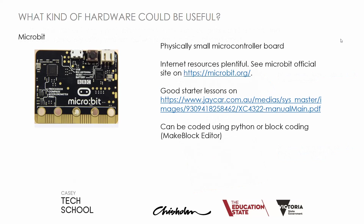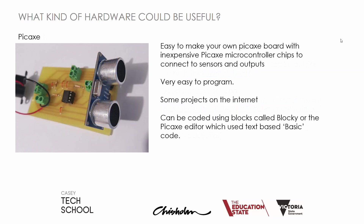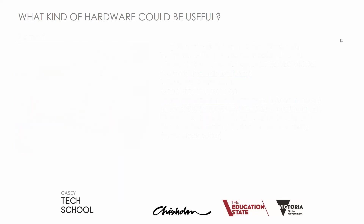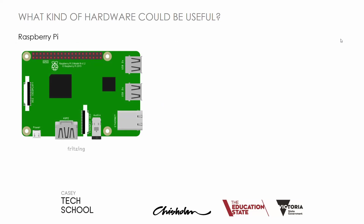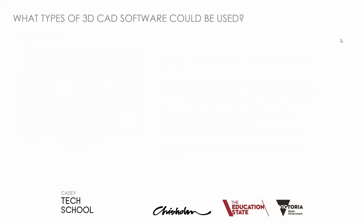A Microbit is another microcontroller board which has gained popularity. It's small, easy to use, there are lots of resources, and it can be used with Python or block coding. Picaxe are easy-to-use microcontroller chips which can be incorporated into your own circuit designs. Raspberry Pi, although it's really a desktop computer, does have input and output pins like Arduino, and there are lots of resources on the internet.